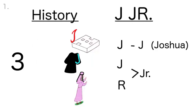Now let's say that three times with just the pictures: 3 J Jr., Joshua, Judges, Ruth. 3 J Jr., Joshua, Judges, Ruth.